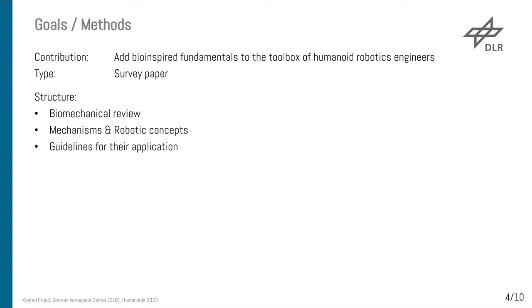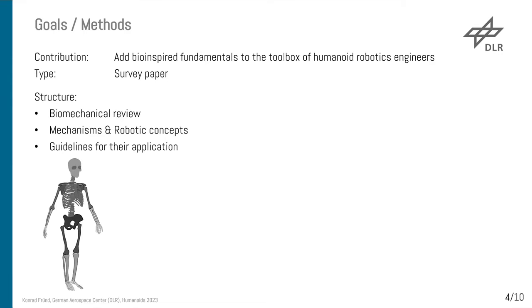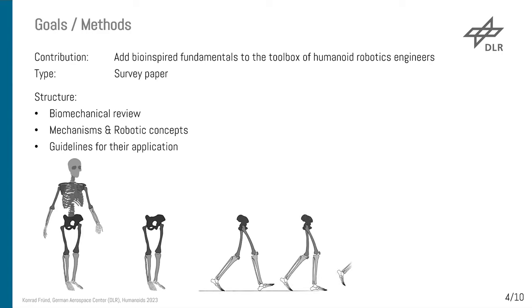For this, my structure was as follows: first, a biomechanical review; then deducing the mechanisms and robotic concepts; before finishing with a guideline for their application. The underlying model was concentrating on the sagittal plane of the lower body of the human. So let's start running.